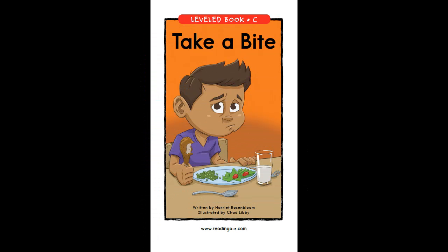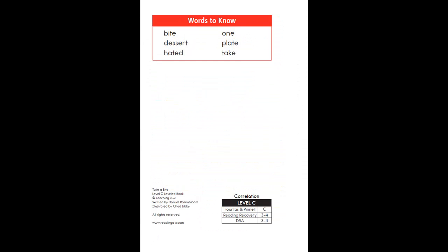Now listen to the story and repeat each sentence after you hear it. Remember those important vocabulary words — listen and repeat after you hear them: bite, dessert, hated, one, plate, take.